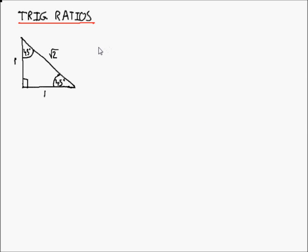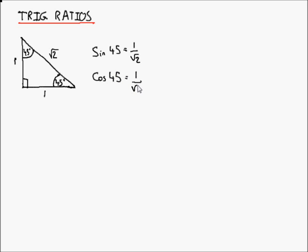So let's write that out. Sine of 45 is equal to 1 over root 2. Cosine of 45 is also equal to 1 over root 2.